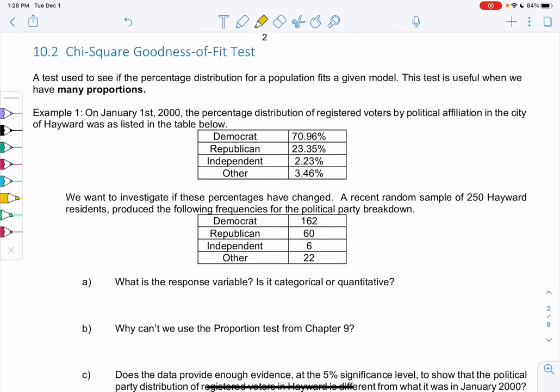Section 10.2 Chi-square goodness of fit test. This test is used to see if the percentage distribution for a population fits a given model. This test will be useful when we have many proportions rather than just one. That's how I know when to use this test - it's for proportions and when I have lots of proportions.